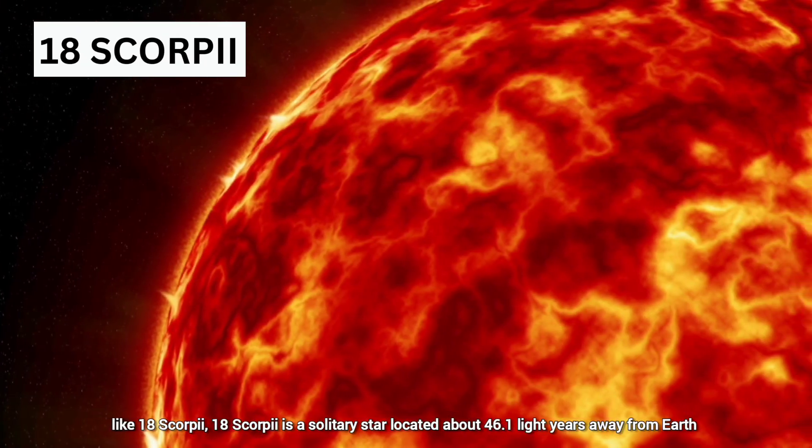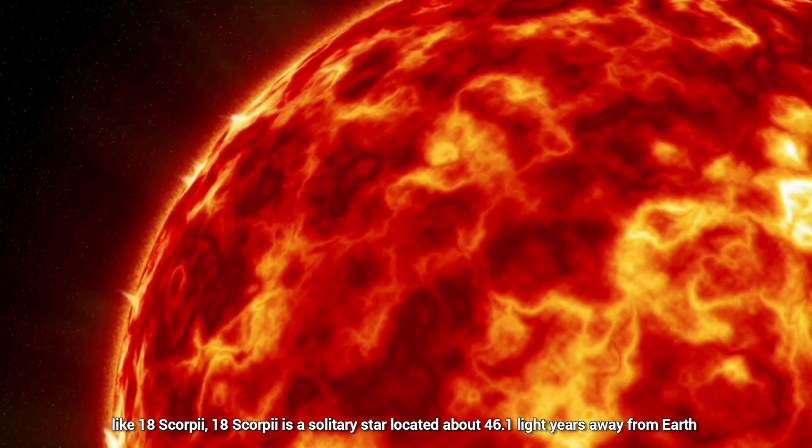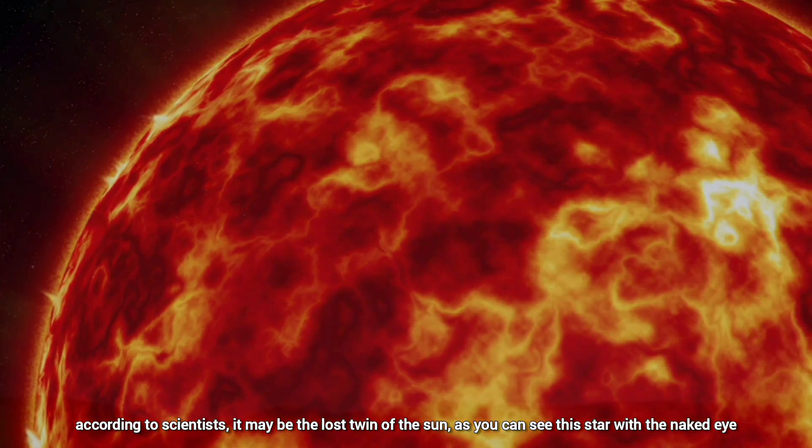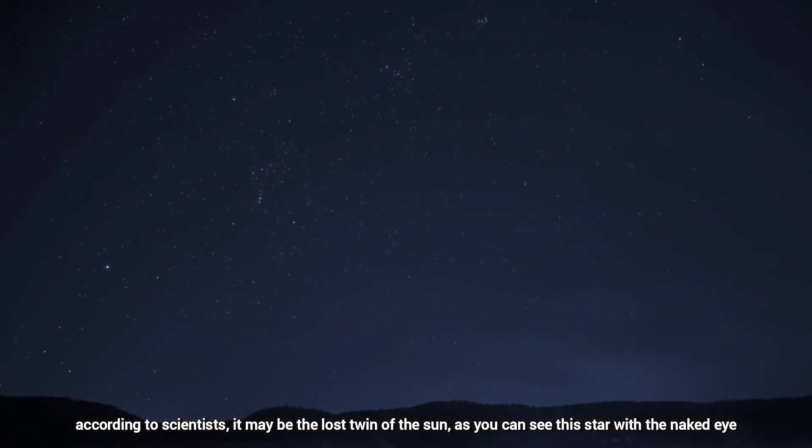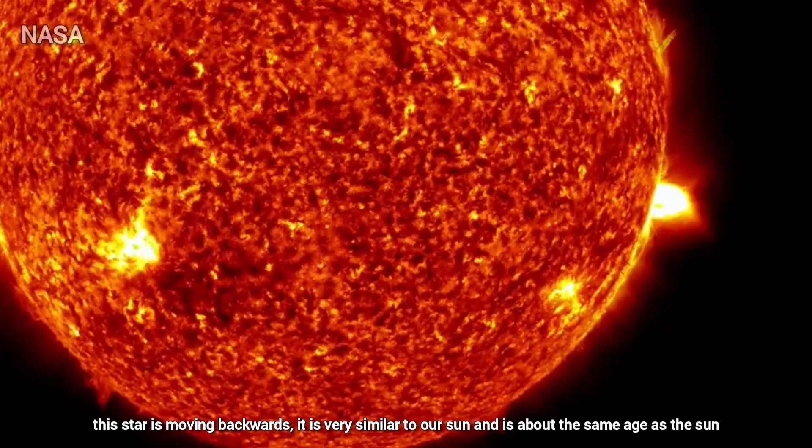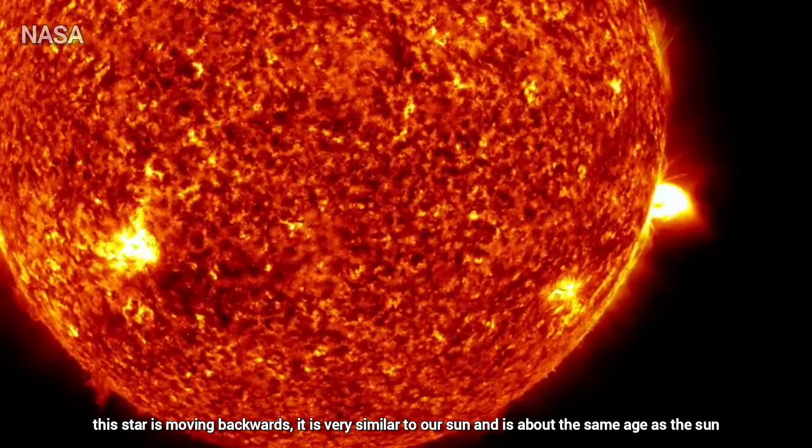18 Scorpii is a solitary star, located about 46.1 light years away from Earth. According to scientists, it may be the lost twin of the Sun. As you can see this star with the naked eye, this star is moving backwards. It is very similar to our Sun and is about the same age as the Sun.